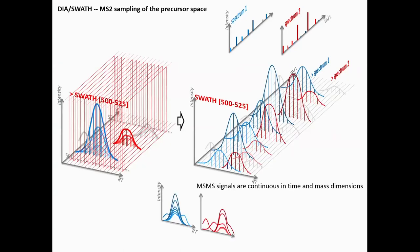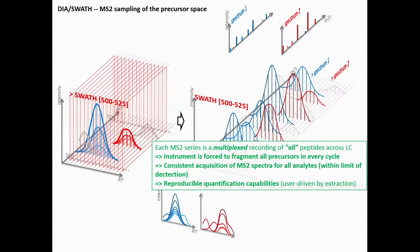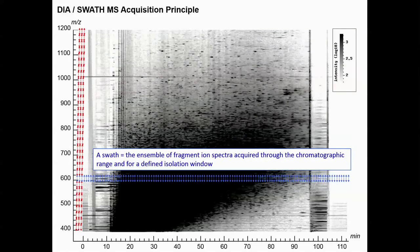If you know where to look and what the appropriate fragment ions are, you can still retrieve a specific signal — it ends up looking something like SRM data. The instrument is forced to fragment all precursors in every cycle, and we have consistent acquisition of MS2 spectra for all analytes within the limit of detection. We hope this will lead to reproducible quantification capabilities similar to what's available with SRM. Here we have the retention time and mass-to-charge dimensions, each dot is essentially a peptide, and we try to comprehensively sample this precursor space with windows of 25 mass-to-charge units. One SWATH is the ensemble of fragment ions and spectra collected over the whole retention time gradient for one precursor isolation window.